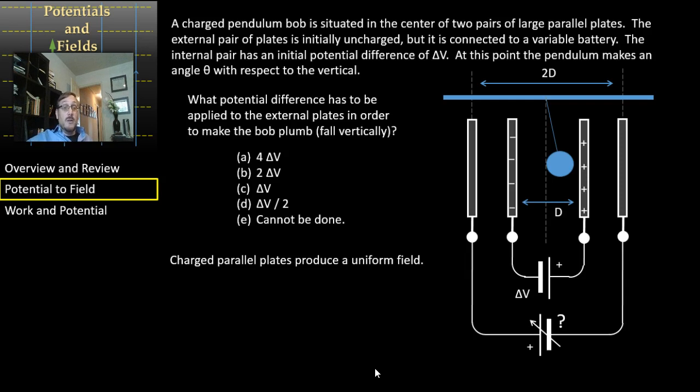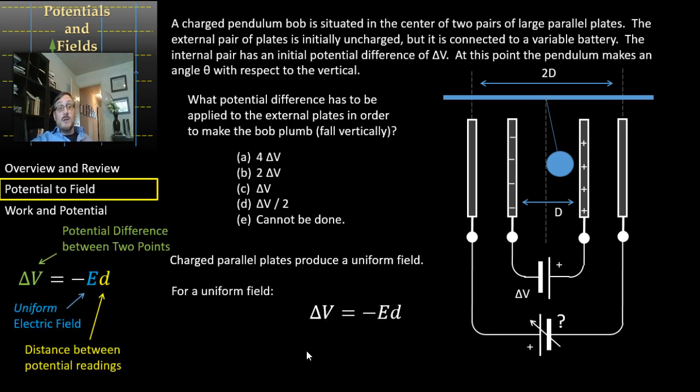That's going to be very useful because of that equation we got in the last class: the potential difference between two points is equal to the electric field between those points times the separation between those points. So this d is that separation.